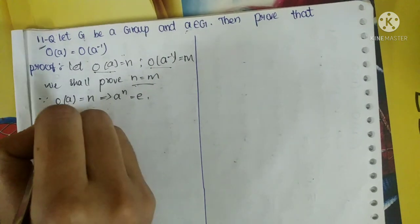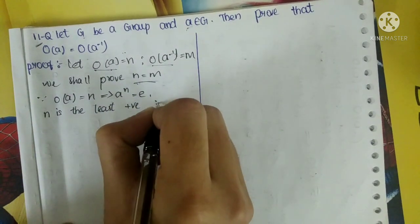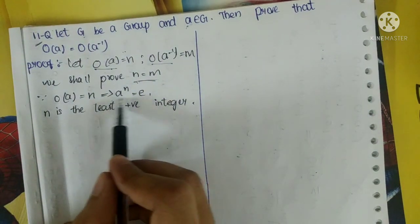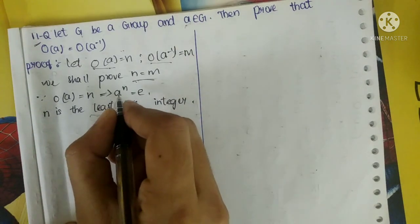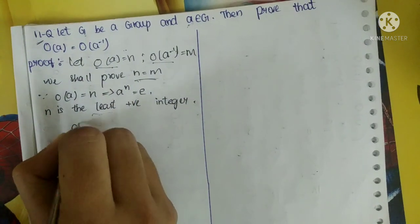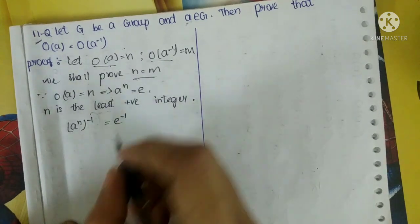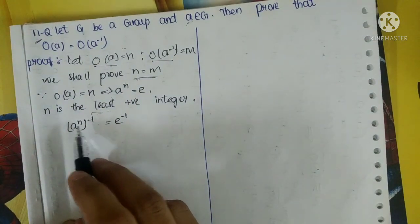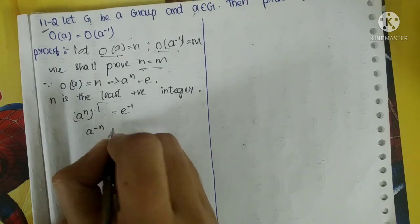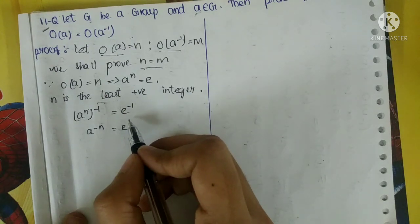Here N is the least positive integer — the least positive integer such that A^N = E. Now we multiply both sides by A^(-1), so A^N multiplied by A^(-1) equals E multiplied by A^(-1), giving us A^(N-1) ... A^(-N) = E.